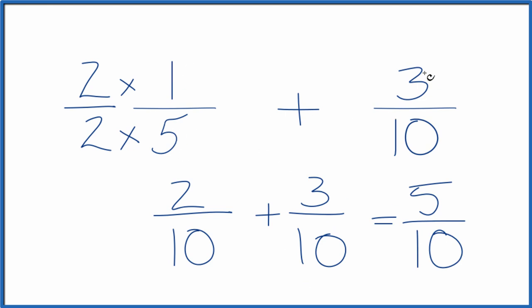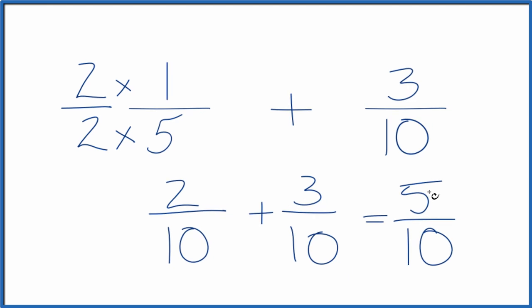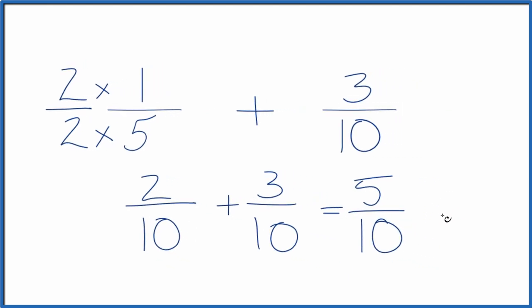So one-fifth plus three-tenths, that equals five-tenths. And because five goes into ten evenly, we can simplify this. Five divided by five is one, and ten divided by five is two. So we've been able to simplify this down to one-half.